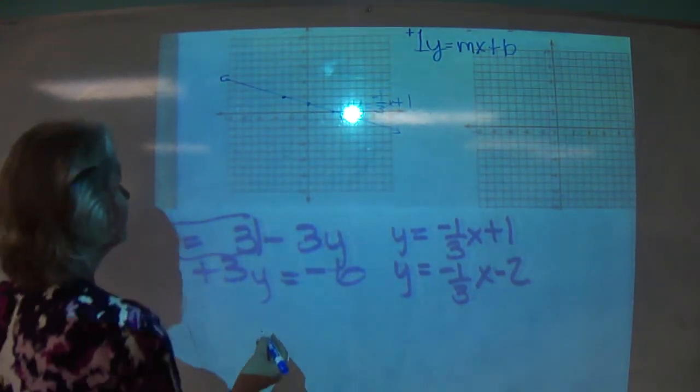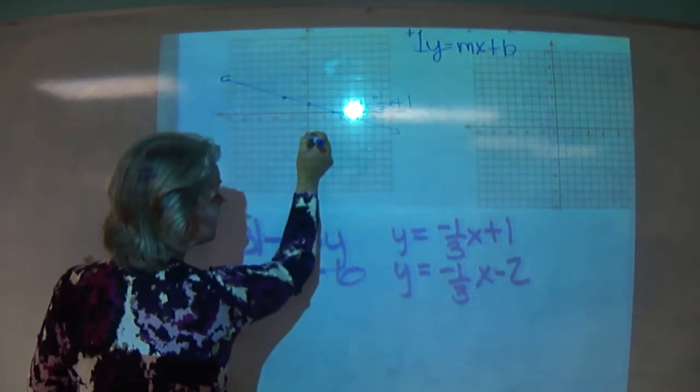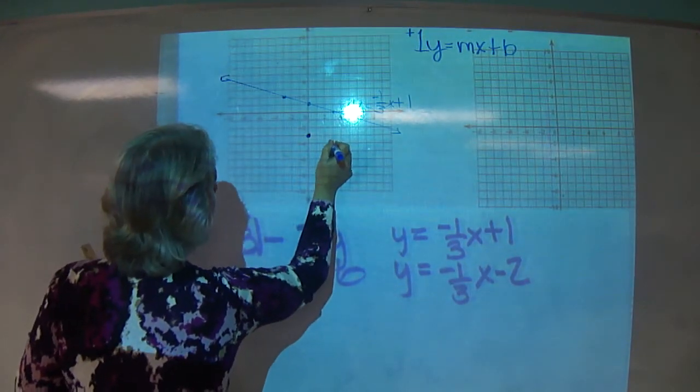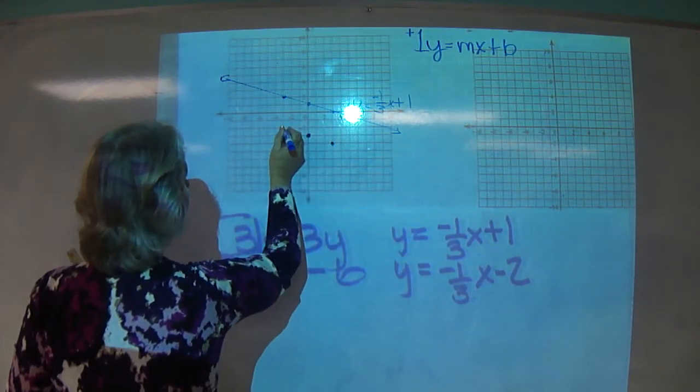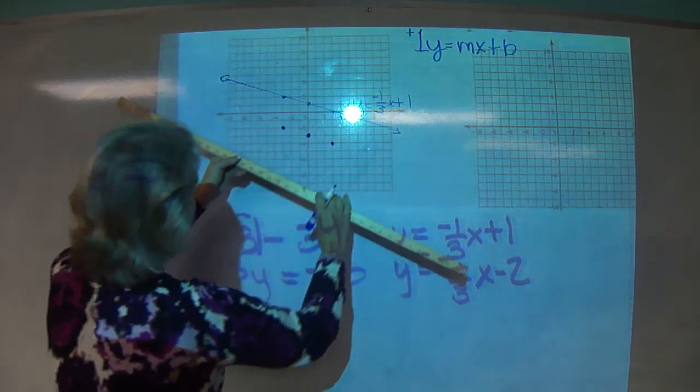So, graph the other line, starting at negative 2, down 1 over 3, or up 1 back 3, doesn't matter which.